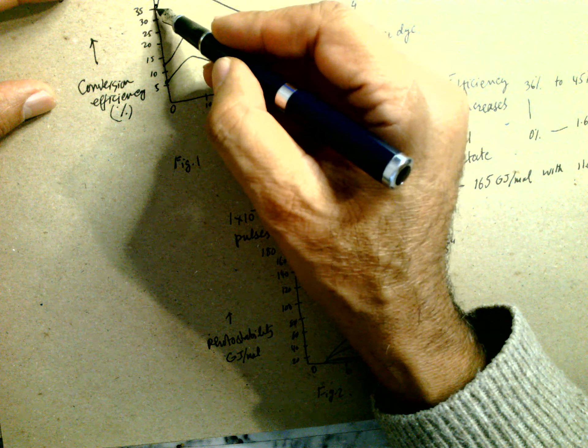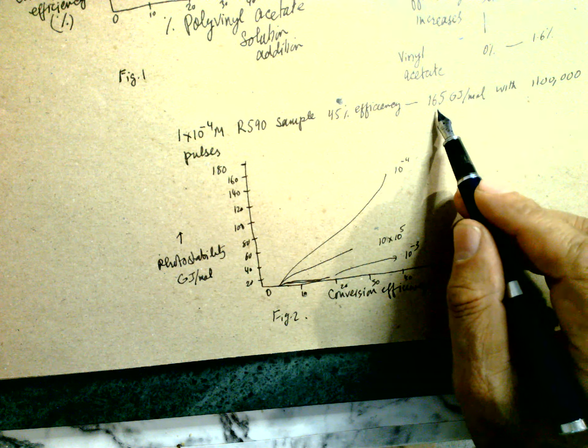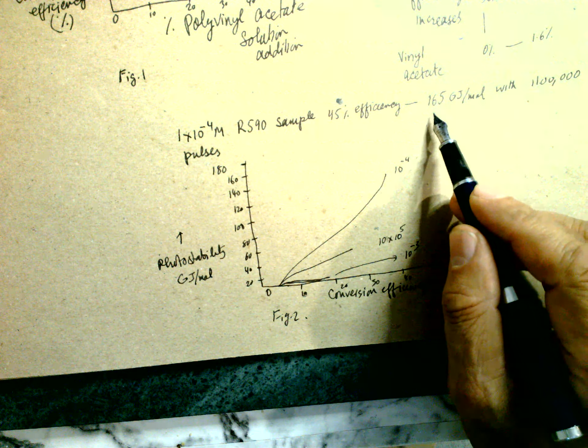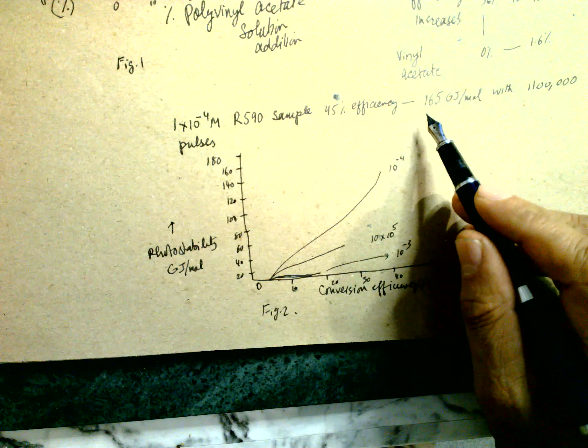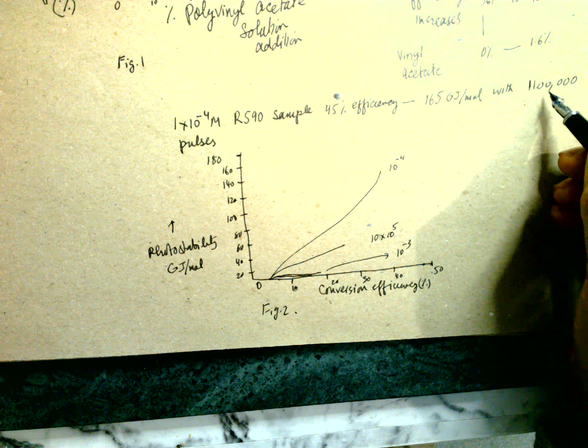For 10 power minus 4 molar laser dye sample, there's 45 percent efficiency and the initial photo stability is 150 gigajoule per mole or 11,000 pulses.